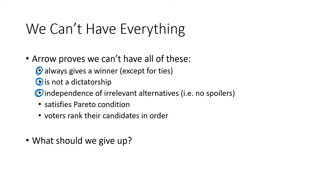Satisfying the Pareto condition — the Pareto condition says that if every single voter likes candidate A more than candidate B, then candidate B shouldn't win. That seems pretty intuitive; that seems like something you would want to have. And let's not sleep on this last one: voters ranking their candidates in order. Maybe that is something that we can give up — maybe there's another way we can cast our votes and express some kind of preference, but not actually do it by ranking the candidates in order.